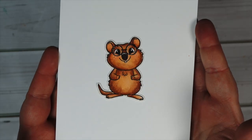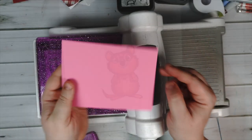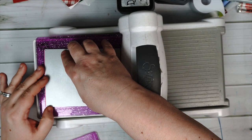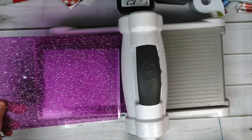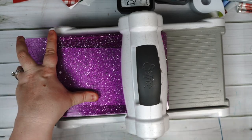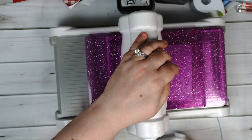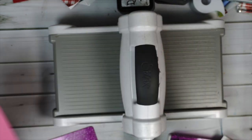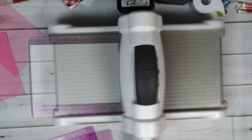After I was done coloring this cute little quokka image it was time to do my die cutting. I started with the stitched hearts cover plate. This die is so awesome. It gives so much detail to the background. I think this may be my favorite item from the new release.